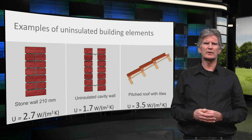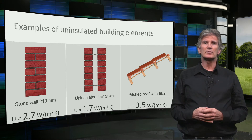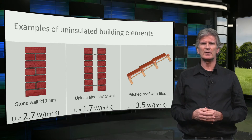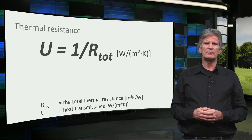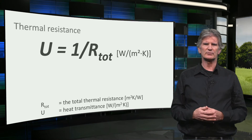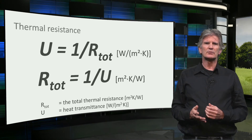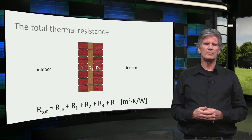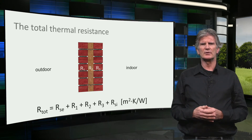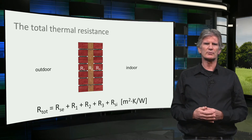How can we reduce the U-value of these uninsulated building elements? For that we have to look somewhat deeper into the U-value of multilayered building elements. The U-value is 1 divided by the total thermal resistance of the construction. The total thermal resistance of a wall is composed of the resistance of the individual layers, with an extra resistance on the inner and outer surface called the surface resistance.